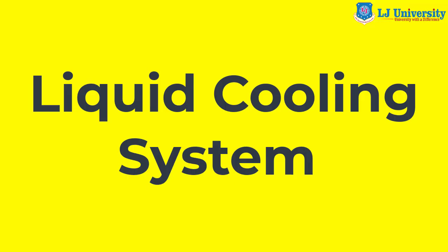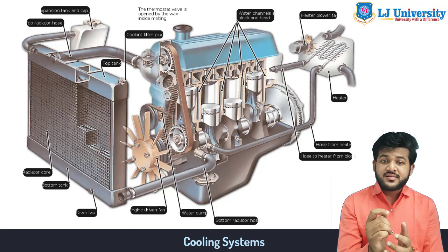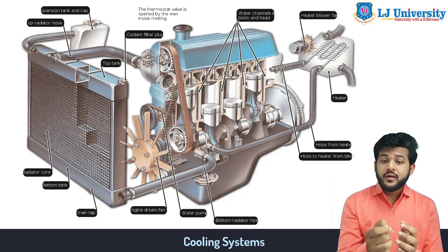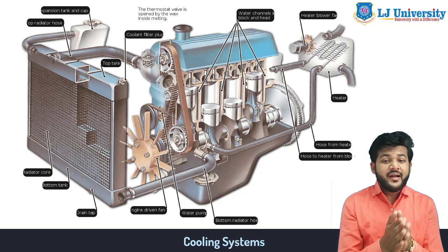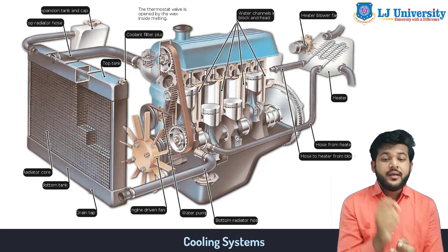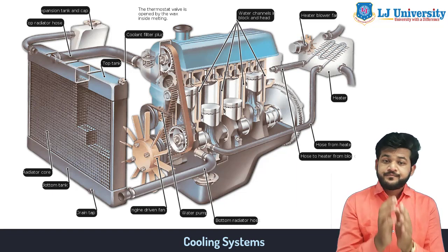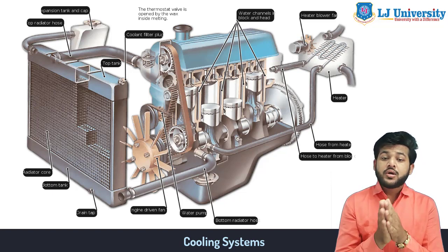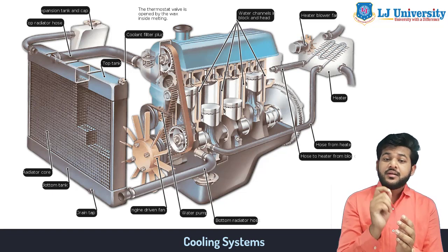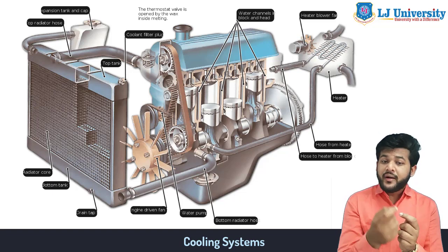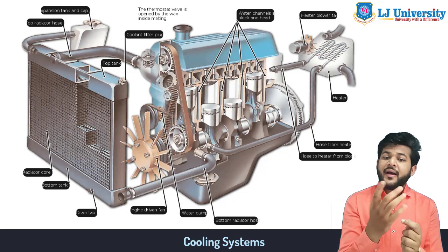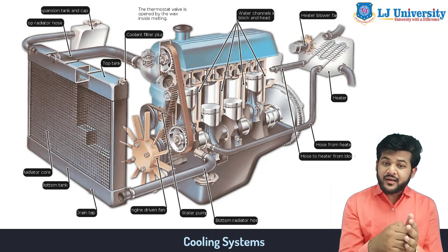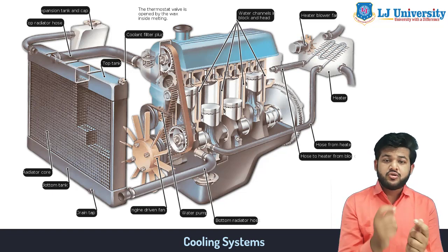Liquid cooling systems are the ones most commonly used today. In a vehicle with a liquid cooling system, heat is carried away by a heat-absorbing coolant that circulates through the engine, especially around the combustion chamber in the cylinder head area. The coolant is pumped through the engine, absorbs the heat of combustion, and is then circulated to the radiator where the heat is transferred to the atmosphere. The cooled liquid is then transferred back to the engine, and this process repeats.